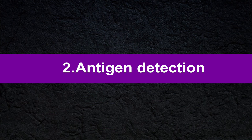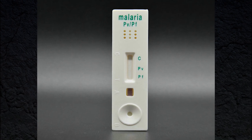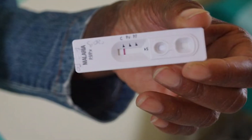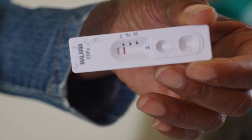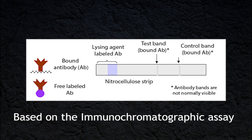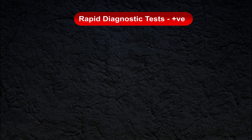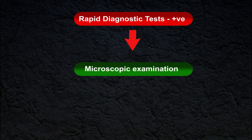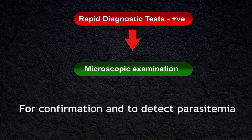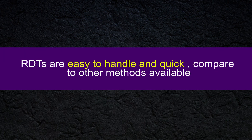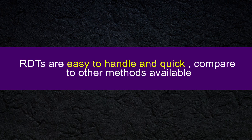Antigen detection tests for malaria are available as rapid diagnostic tests, which can be used as an alternative to microscopy. These methods are mainly based on immunochromatographic assay format and provide results in 2 to 15 minutes. But once a rapid diagnostic test gives positive results, it is necessary to carry out microscopic examination for confirmation and to detect parasitemia. These rapid diagnostic tests are easy to handle and quick compared to other methods.